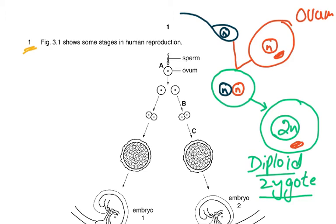I can think of a question they might ask on this. The male haploid nucleus comes from the sperm and the female haploid nucleus comes from the ovum, but the zygote cytoplasm is that of the ovum. Only the male nucleus comes and fuses with it to form the diploid zygote.